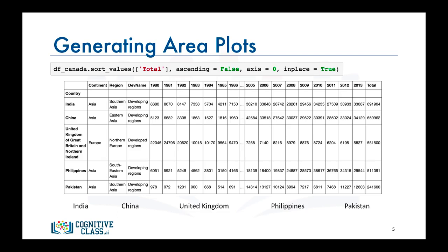Can we now go ahead and generate the area plots using the first five rows of this data frame? Not quite yet. First, we need to create a new data frame of only these five countries, and we need to exclude the total column. More importantly, to generate the area plots for these countries, we need the years to be plotted on the horizontal axis and the annual immigration on the vertical axis. Note that matplotlib plots the indices of a data frame on the horizontal axis, so with the current data frame, countries would be plotted on the horizontal axis. To fix this, we need to take the transpose of the data frame.